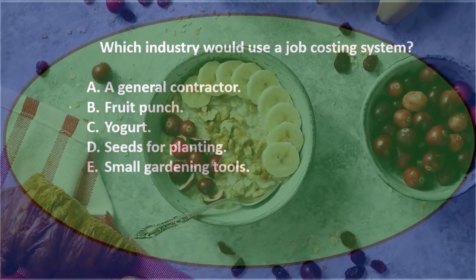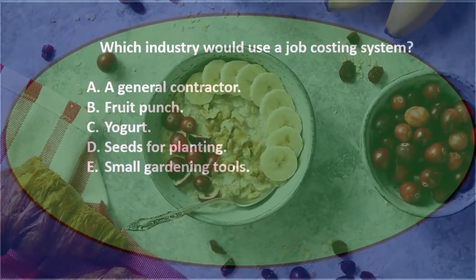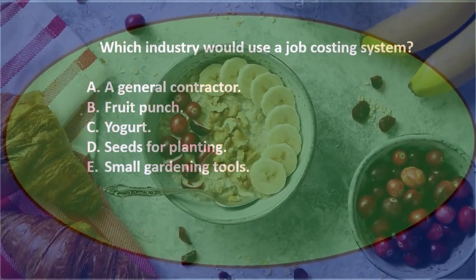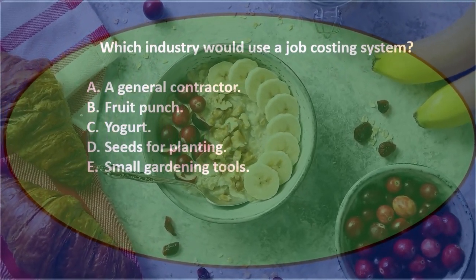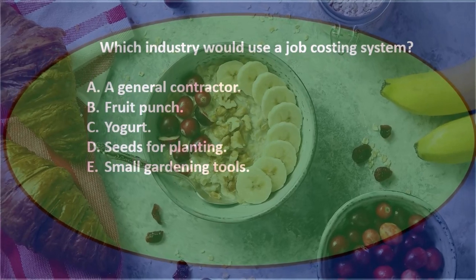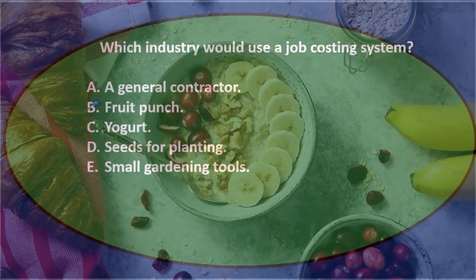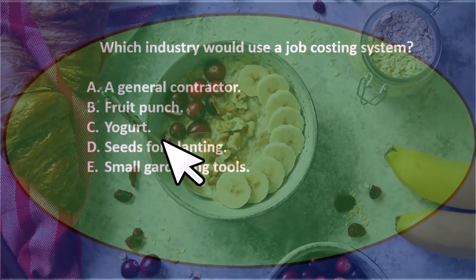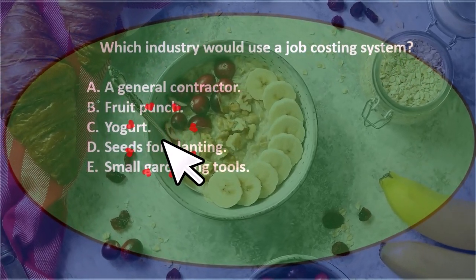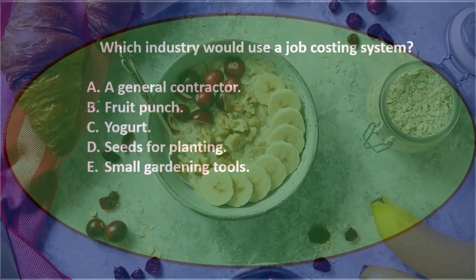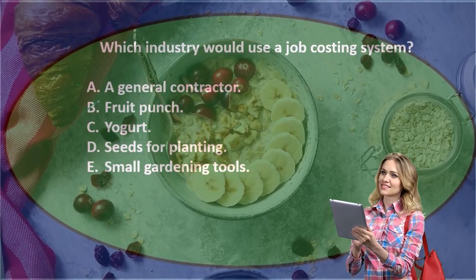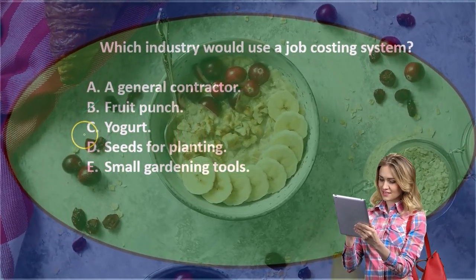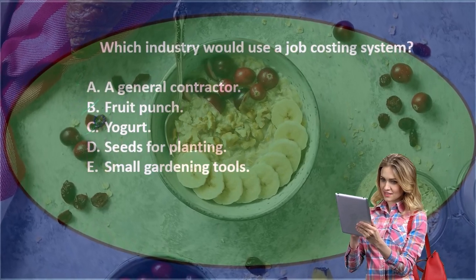If we're mass producing fruit punch, unless it's some customized production, I would think that would be a process cost because all the end results would probably be the same — we'd be using it to maximize production. Yogurt, again, I would think the same thing: we're trying to make all the yogurt the same, and once we get the process down we can mass produce it and use a process cost.